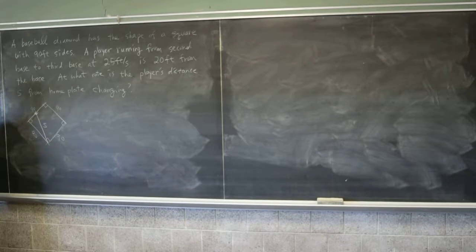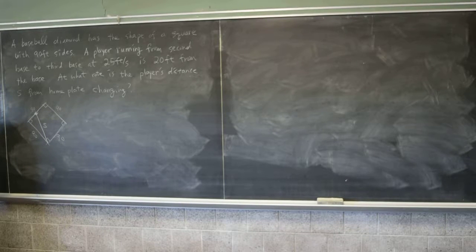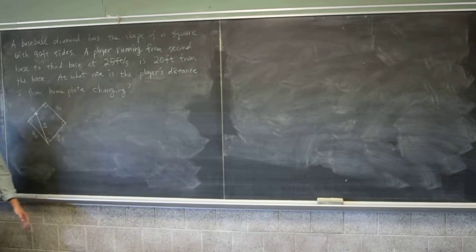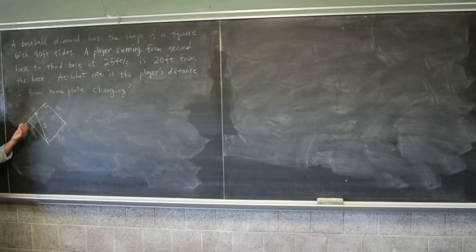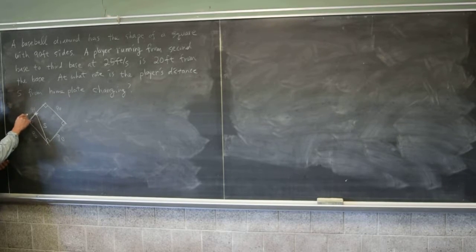Alright, what variable should we assign? We have to talk about the speed, 25 feet per second, right? Yeah. So we need to say this is the rate of change of some variable. So x should be what? Which one? The small one. We want x to be this one. Why?